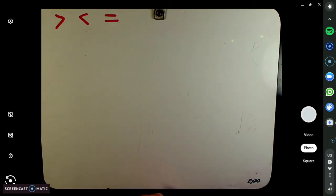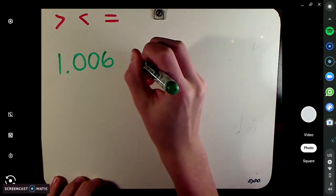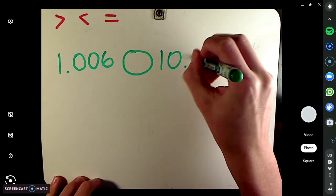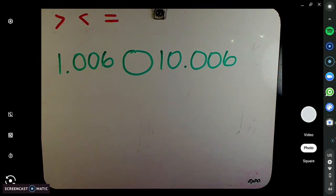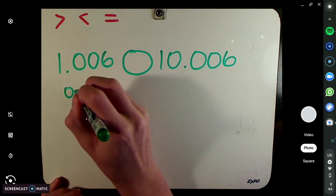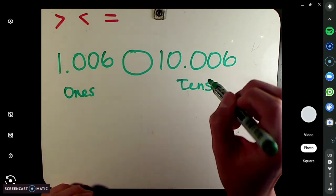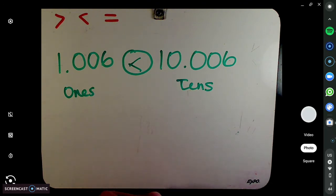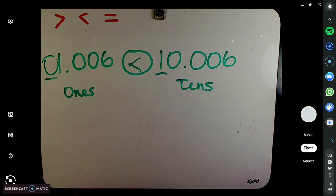Here's one that I'm going to pick. First thing to do: look at the biggest place value. What's the largest place value over here? Ones. The largest place value over here is tens. This one's got to be bigger — it has the largest place value. One ten versus zero tens — it's got to be bigger.